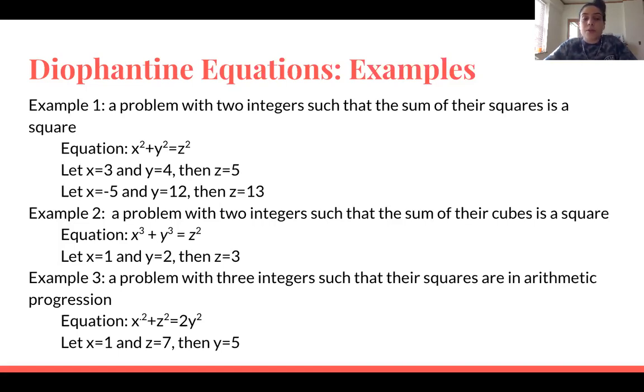Example 2 involves a problem with two integers such that the sum of their cubes is a square. So the equation would look like x cubed plus y cubed equals z squared. Now let's suppose we have x equals 1 and y equals 2. Then 1 cubed is 1 and 2 cubed is 8 and 1 plus 8 is 9. So then the square root of 9 is 3, so z equals 3.